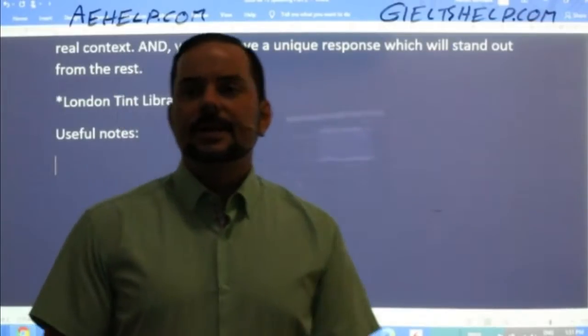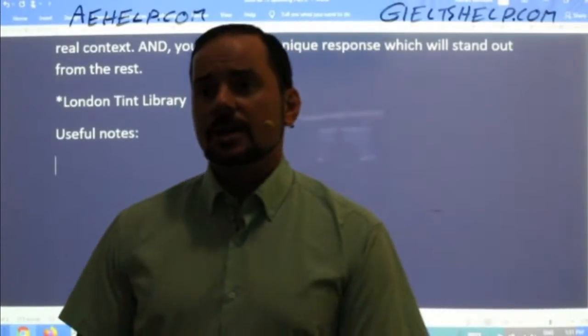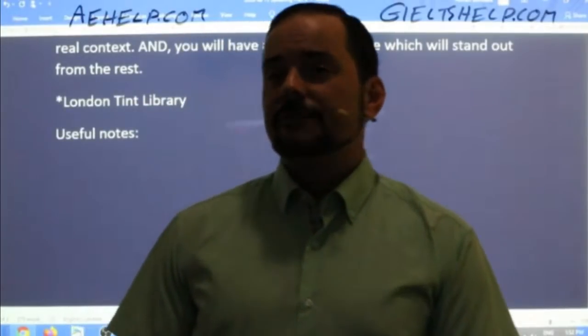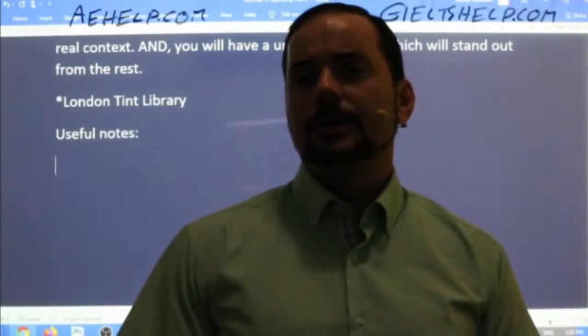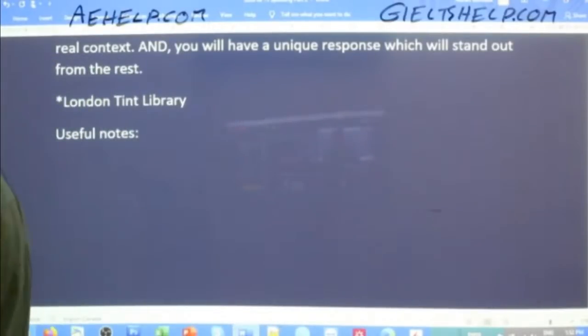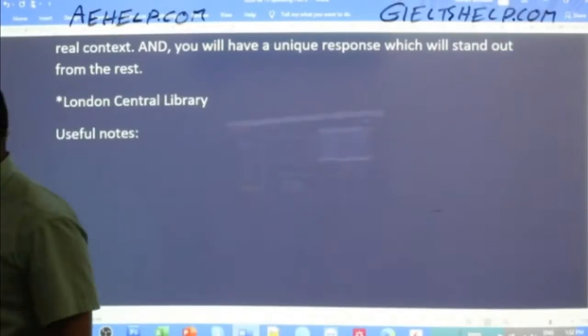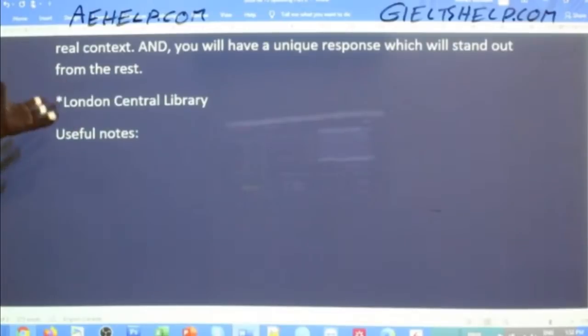So give me some useful notes. Carolina said she made up the name, so I'm going to just change it to London Central Library. Let's call it the London Central Library or London City Library — we're just making it up. It's kind of fun because none of us really know what it is. It's a fictitious library that we've just come up with. Let's create some useful notes.